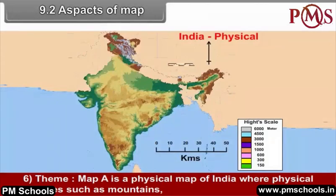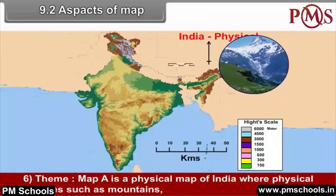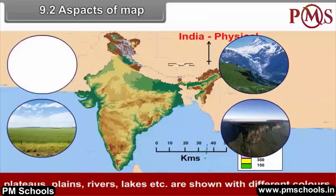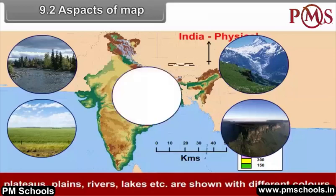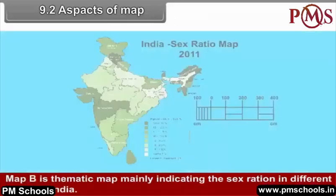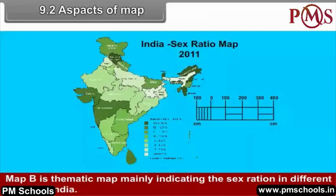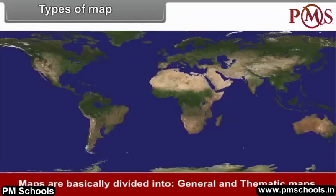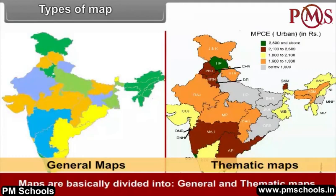6. Theme: Map A is a physical map of India where physical features such as mountains, plateaus, plains, rivers, lakes, etc. are shown with different colors. Map B is a thematic map mainly indicating the sex ratio in different states in India. Maps are basically divided into general and thematic maps.